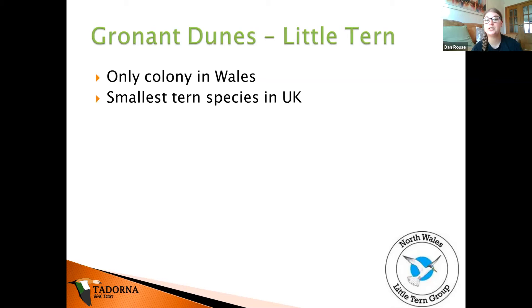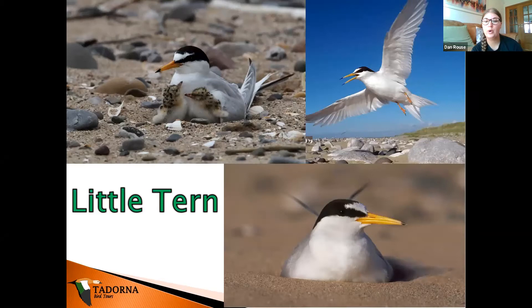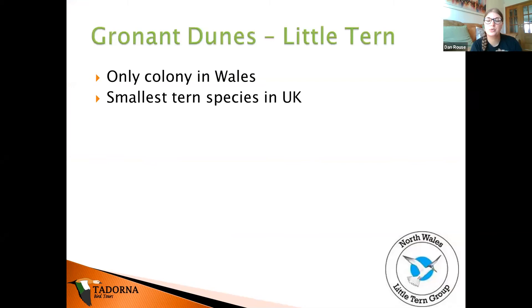Little terns are the smallest tern species we get in the UK. Their Latin name actually translates to 'white-faced tern' — you can see that little white forehead on the terns. They are very, very tiny and they screech and squawk. Their yellow beak is a dead giveaway to distinguish them from other species that use Gronant: common terns and arctic terns have red beaks, sandwich terns have black beaks, and little terns have lovely yellow beaks.